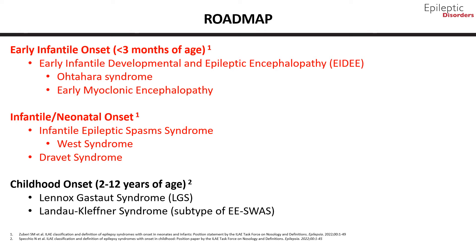Infantile epileptic spasms syndrome, or IESS, is a term proposed to encompass both West syndrome as well as infants presenting with epileptic spasms who do not fulfill all the criteria for West syndrome. West syndrome classically refers to the triad of epileptic spasms, hypsarrhythmia, and developmental stagnation or regression. However, infants with IESS often lack one of these criteria. Infantile epileptic spasms syndrome is characterized by onset of epileptic spasms between 1 and 24 months of age, peaking at ages 3 and 21 months, although a later onset may occur. In part 1 of this module, we will talk about early infantile onset and infantile neonatal onset epileptic encephalopathies. In part 2, we will cover childhood onset epileptic encephalopathies.